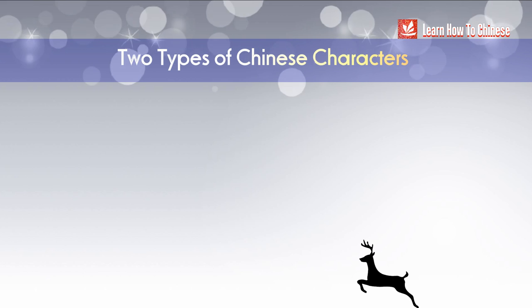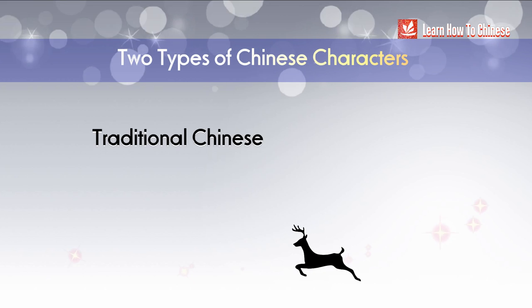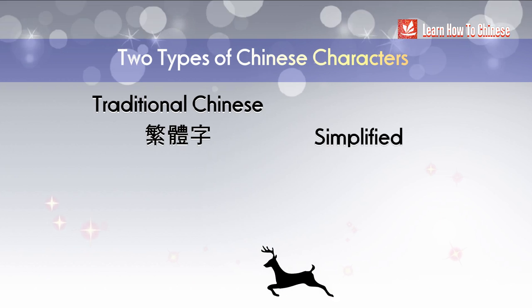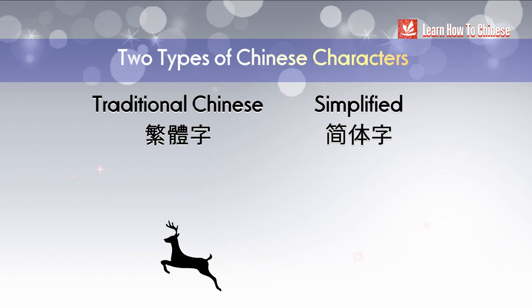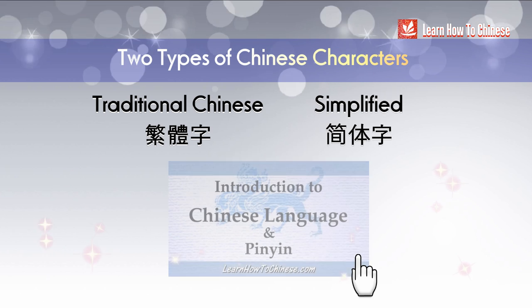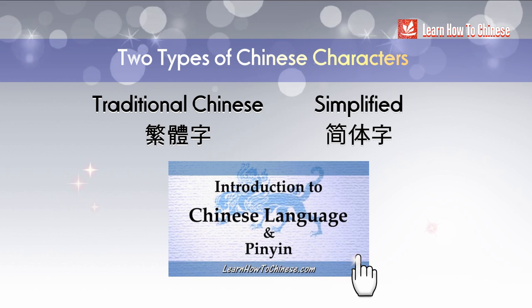In Chinese, there are two types of characters: Traditional Chinese and Simplified Chinese. To find out how these two types of Chinese characters are used in different countries, watch this video for more information.